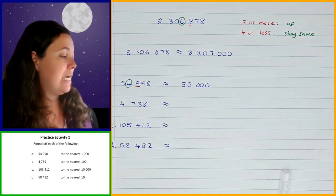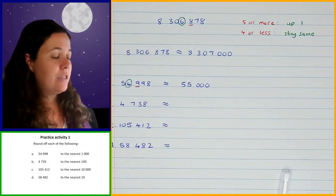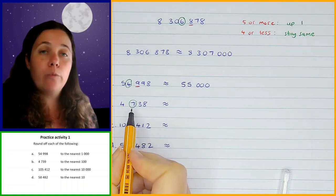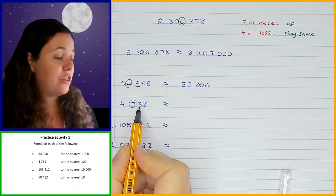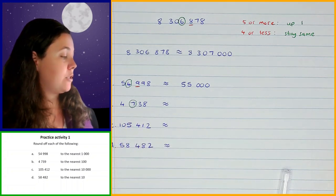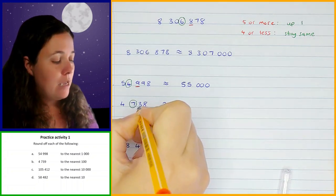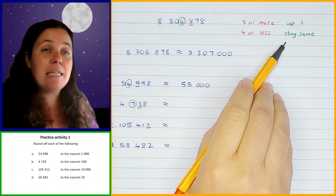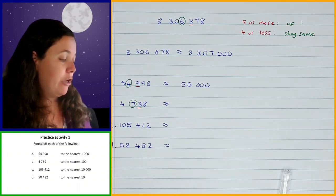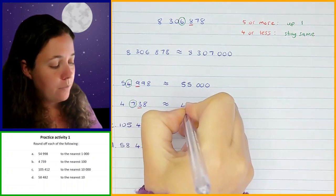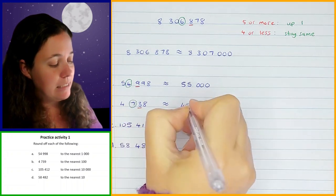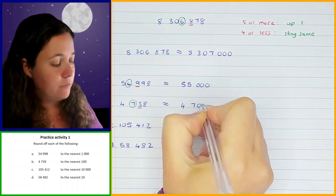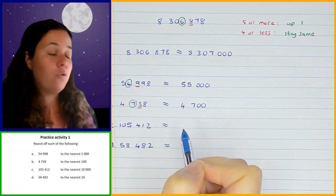The next one, you need to round off to the nearest hundred. The digit in the hundredths position is the seven. The digit straight after it is the three. Three is in the four or less category, which means the seven must stay the same. So when I round this off, I have four, then the seven stays the same, and everything after it changes to zero — so that's zero, zero. That's what you should have got for question B.